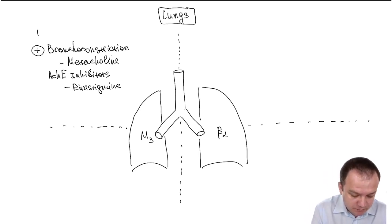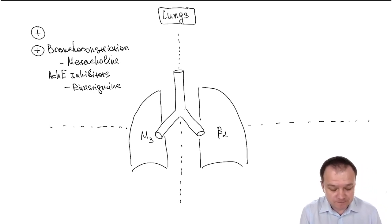Also we should keep in mind that M3 receptors are present in the glands, and activation of M3 receptors also increases secretion of bronchial glands.